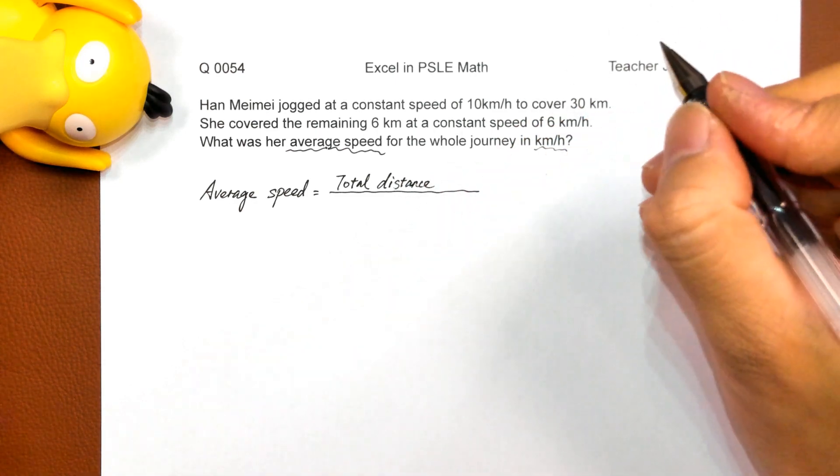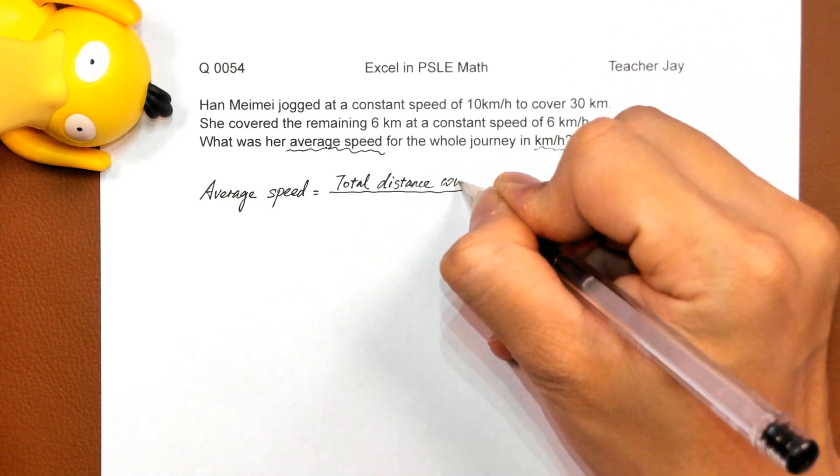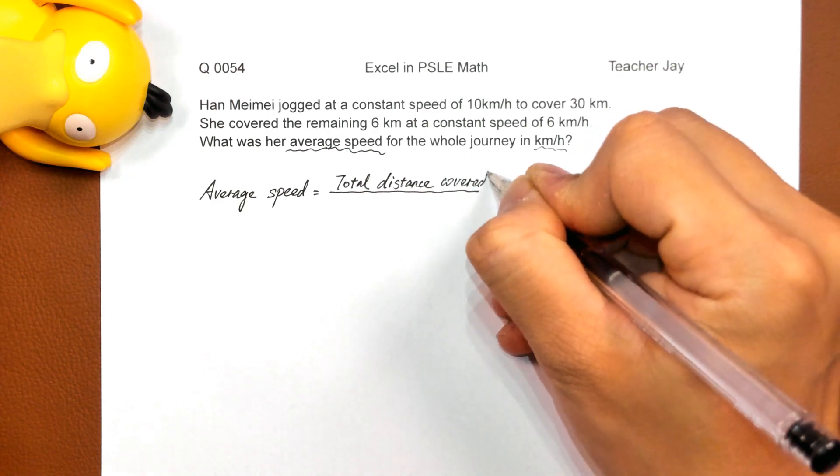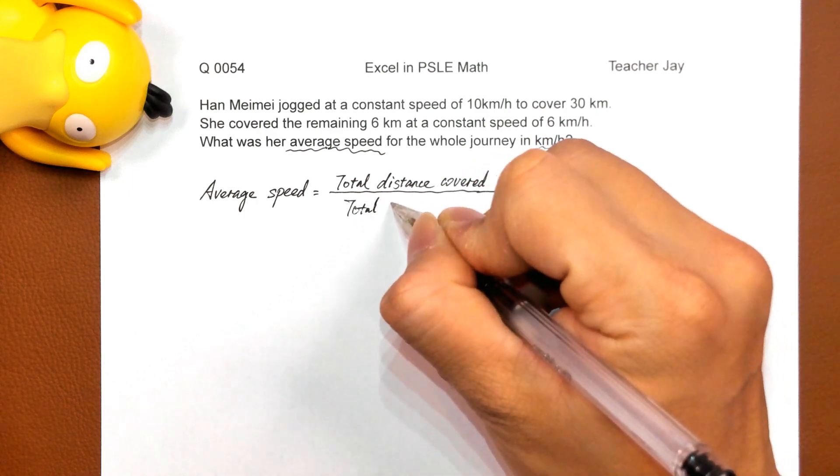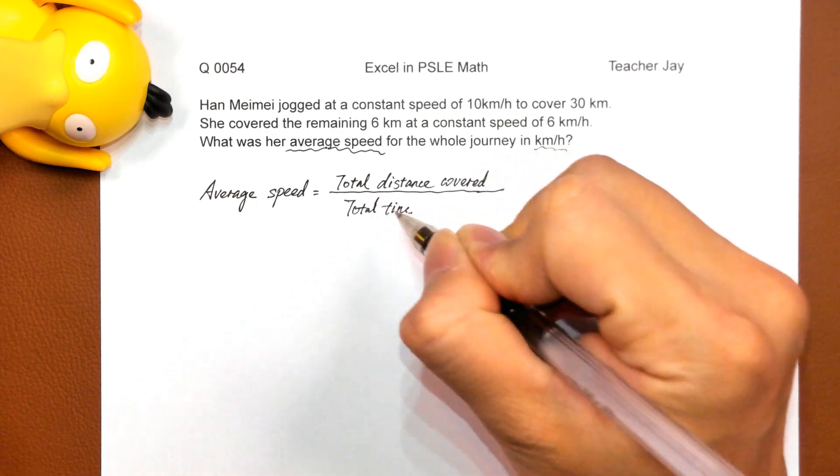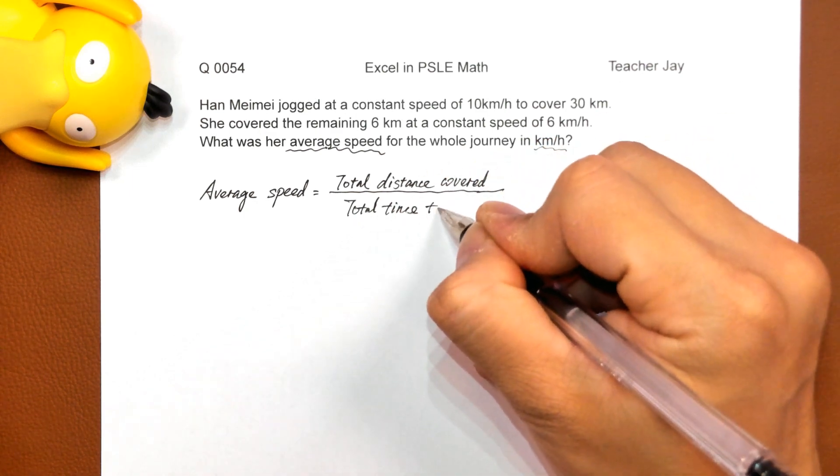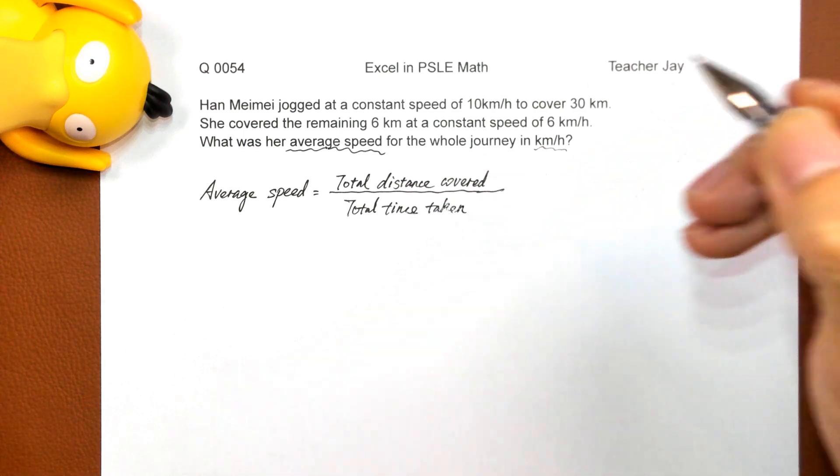Total distance covered divided by total time taken.